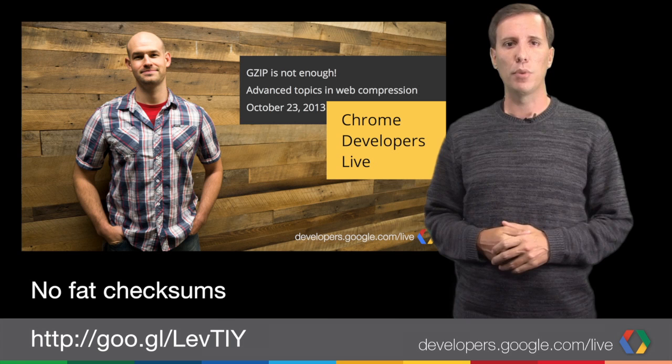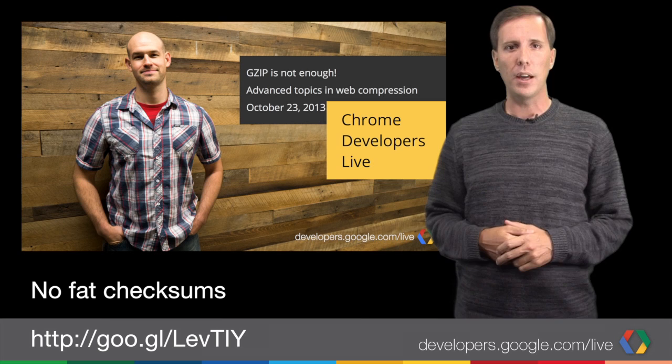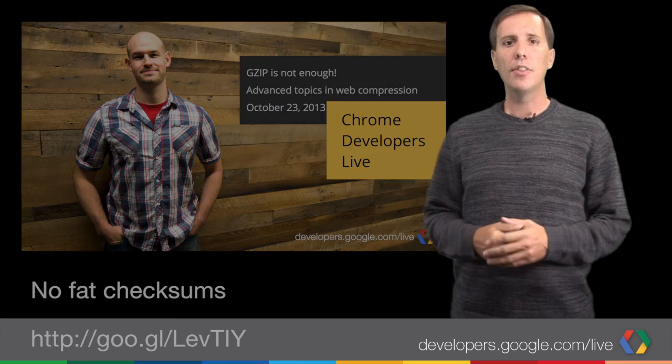And heavy page weight is bad for your bandwidth belt, especially when you're browsing the web on a mobile device. Colt McCandless, resident web performance hacker, tells us about new and exciting ways to compress CSS, JSON, HTML, XML, and JavaScript data on the web, and how GZIP sometimes helps, but can also get in the way.